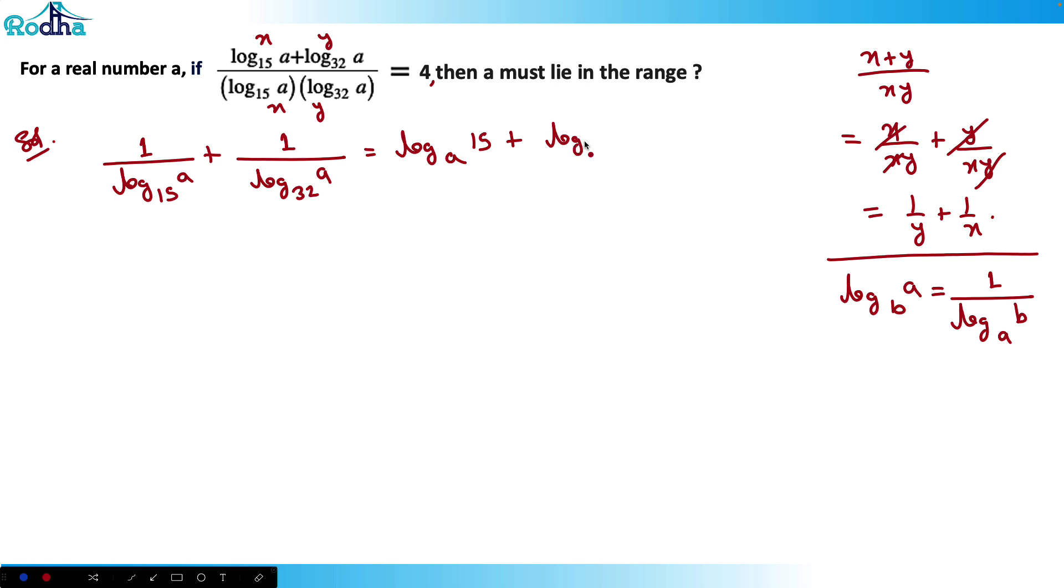Now what happens here? This is actually equal to—this side we have got this all is equal to 4. Now, what I can think here is that 15 and 32 are there.